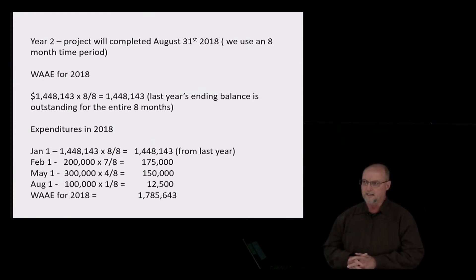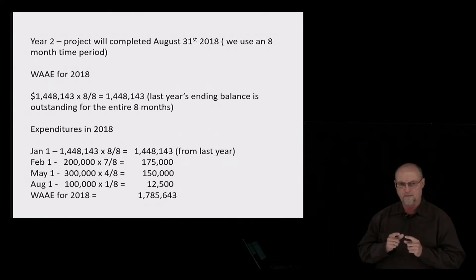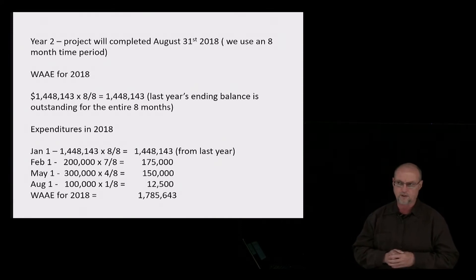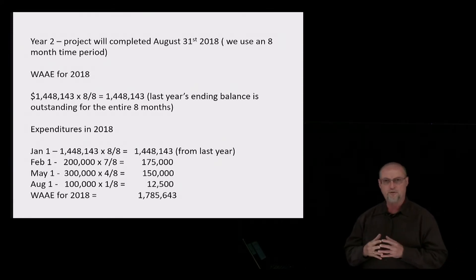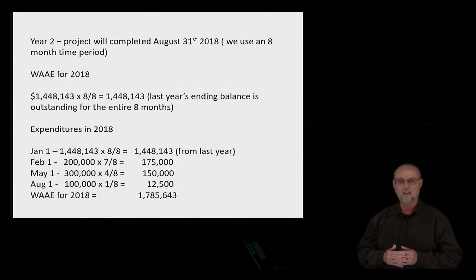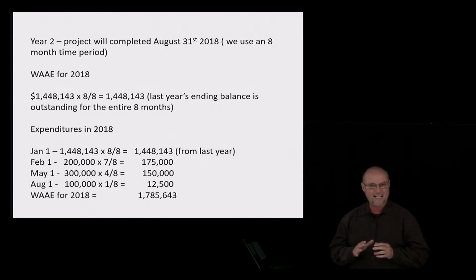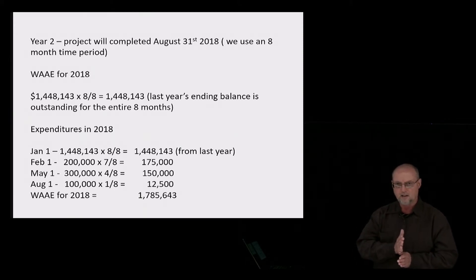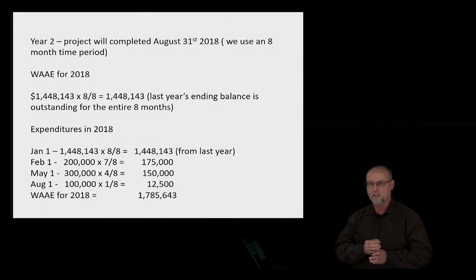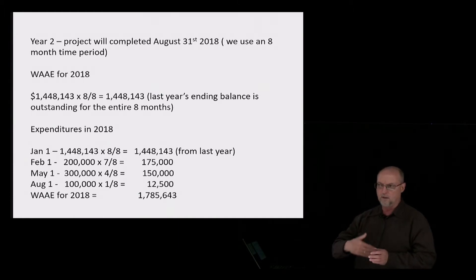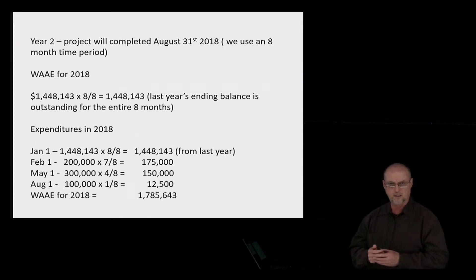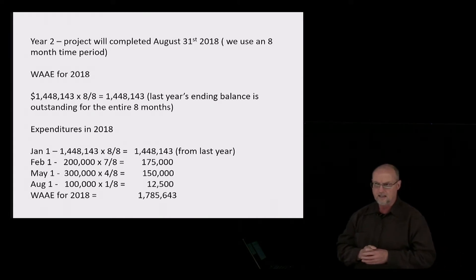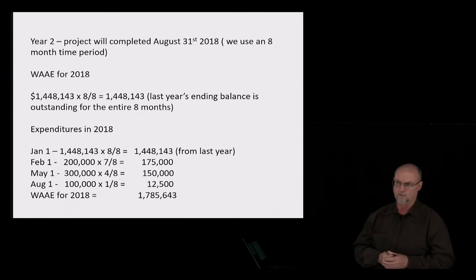Year two — the project will be completed at the end of August. Watch the months carefully: if it says August 1st, you exclude the month of August; if it says August 31st, you include the month of August. So the project ends August 31st — that's going to be eight months out of 2018. When calculating weighted average expenditures for the following year, we only have eight months before the project ends, and remember we stop capitalizing interest when construction is complete. We carry forward the $1,448,143 from the December 31st balance sheet. That's outstanding from January 1st through August 31st, so we multiply times 8/8 and get $1,448,143.